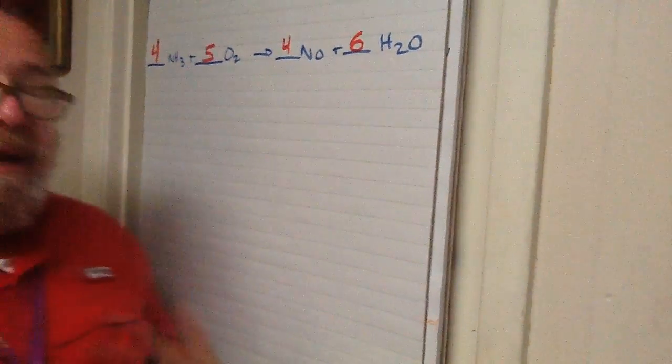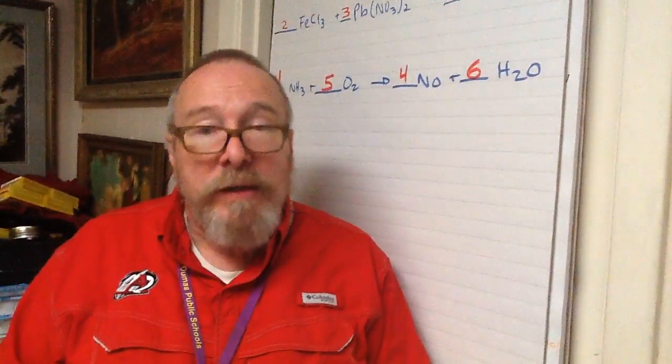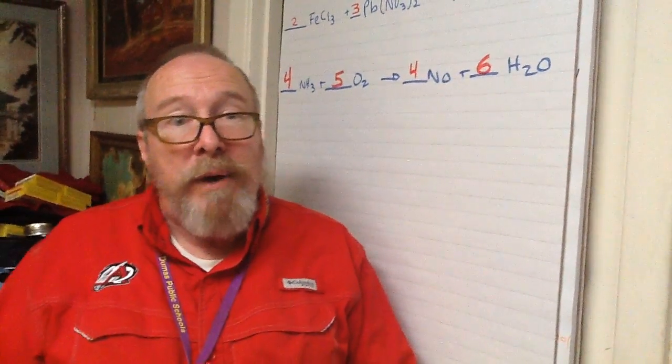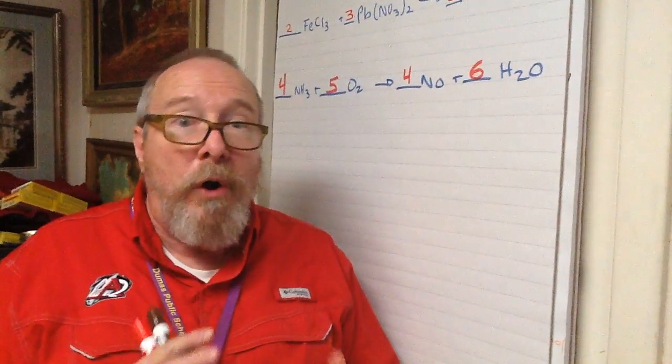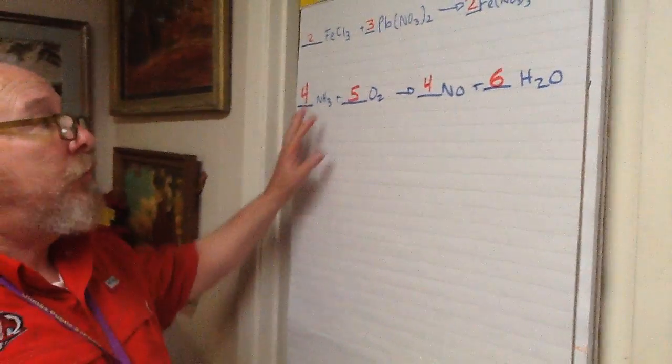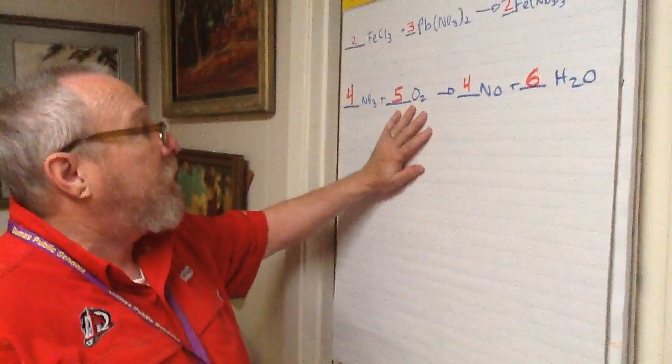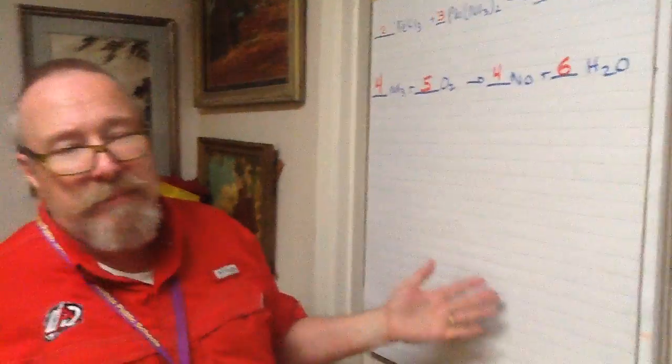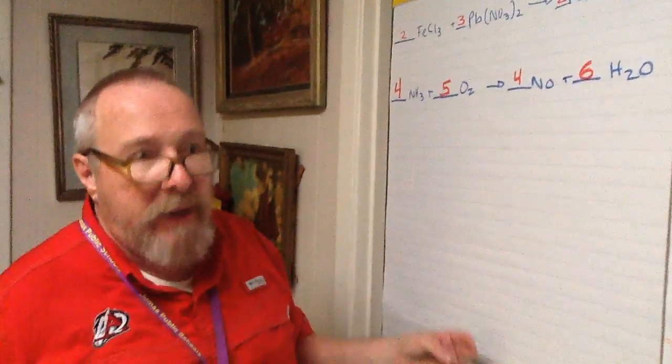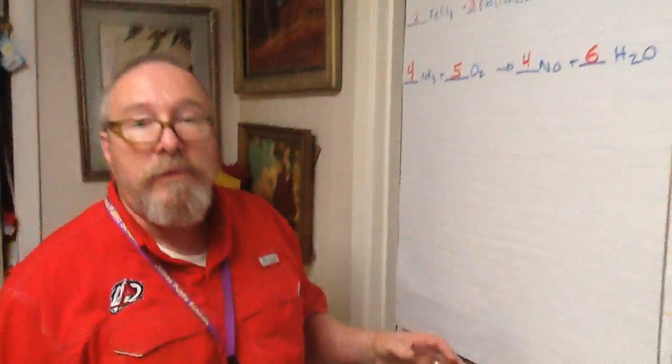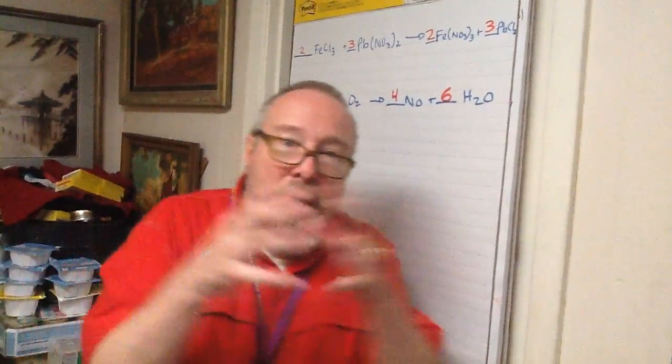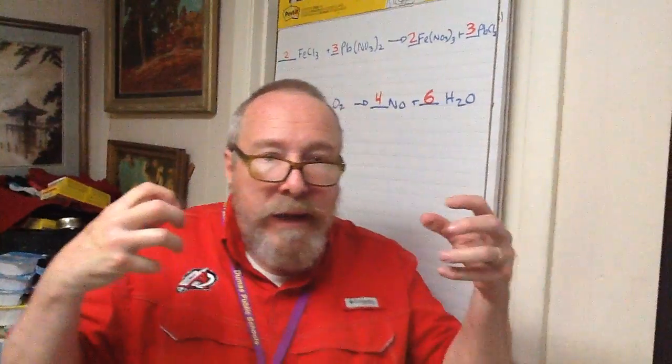So, balancing equations sometimes takes a little trial and error, but, like I say, we need small, whole number coefficients, and in this class, and for 99% of most chemical reactions, anyway, we're not going to go into double digits. You know, for chemical reactions to happen, molecules have to hit together and interact, and they have to do it in a certain geometry, and when you get 5, 6, 7, 8, 9, 10 of them going,